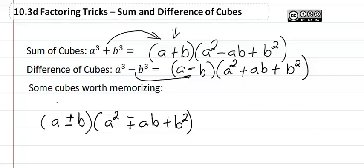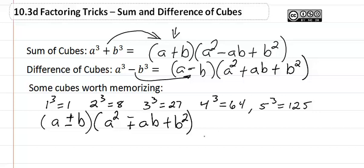Some cubes that you probably should be really familiar with so that you can recognize sum or difference of cubes. We have 1 cubed of course is 1, 2 cubed is 8, 3 cubed is 27, 4 cubed is 64, 5 cubed is 125. Those will help you recognize a lot of the sum or differences of cubes.